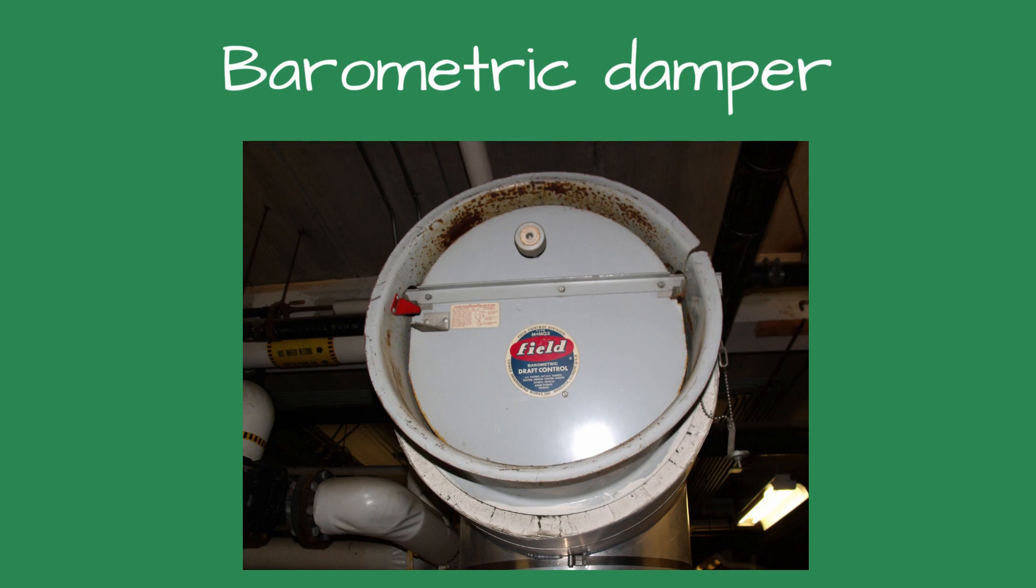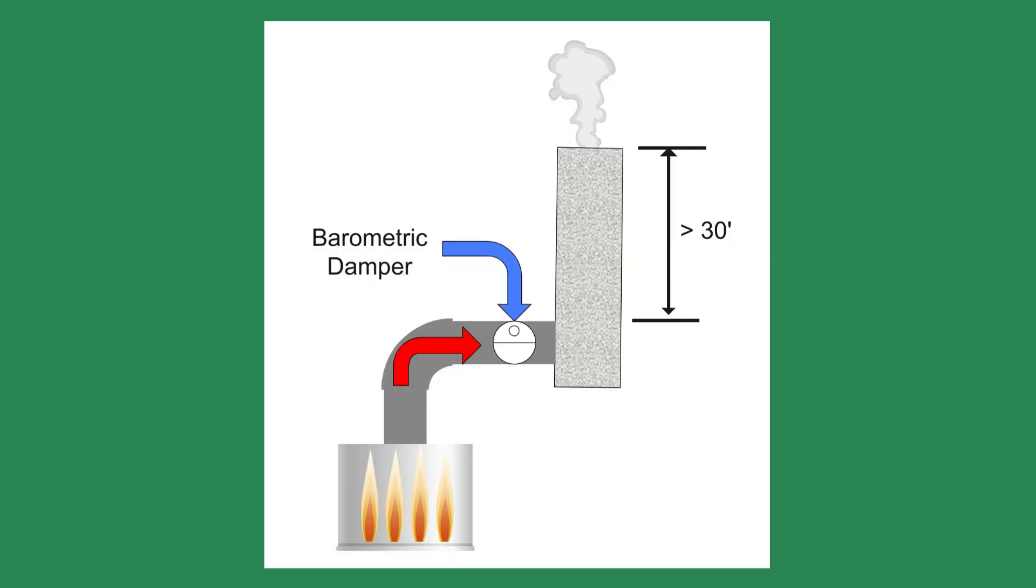Draft controls are recommended when the chimney or stack exceeds 30 feet, and a barometric damper is a common, cost-effective solution. The barometric damper is installed in the flue pipe between the boiler and the chimney. It is set for the desired draft conditions using weights and adjustment screws. If the chimney draft exceeds the set point, the damper will open and allow air from the boiler room inside the chimney rather than stealing heat from the boiler.